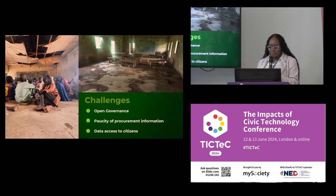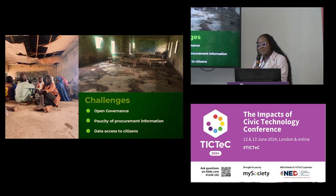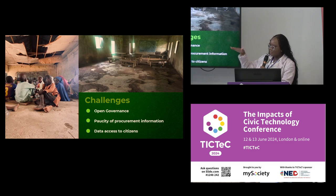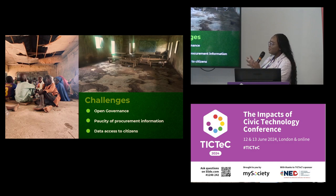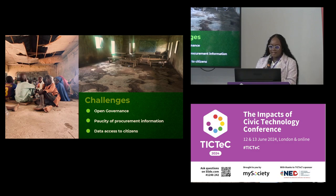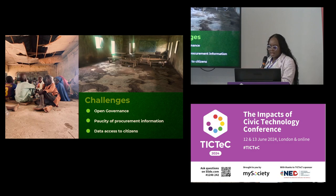The second challenge was passive procurement data. When you request data from the government, they give you a huge stack of PDF documents that someone who is not a data person cannot clean or effectively use. We tried to find a way to simplify the data. The last challenge was data access for citizens — with government not opening up their books, it was very hard for citizens to access data and use it to track government expenditures.